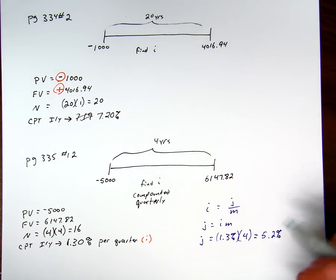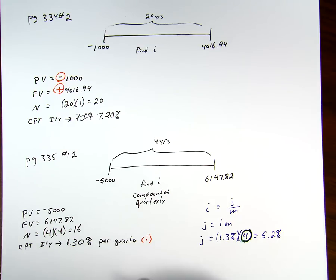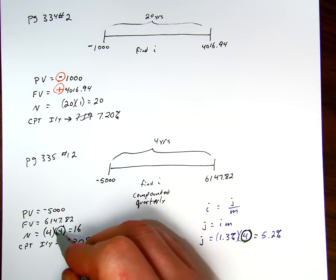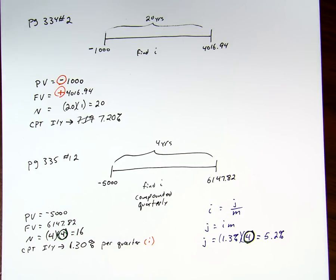The important thing to notice here is that when we're calculating the j, again, this value of m, 4, is the same of that value of m that we used there before.